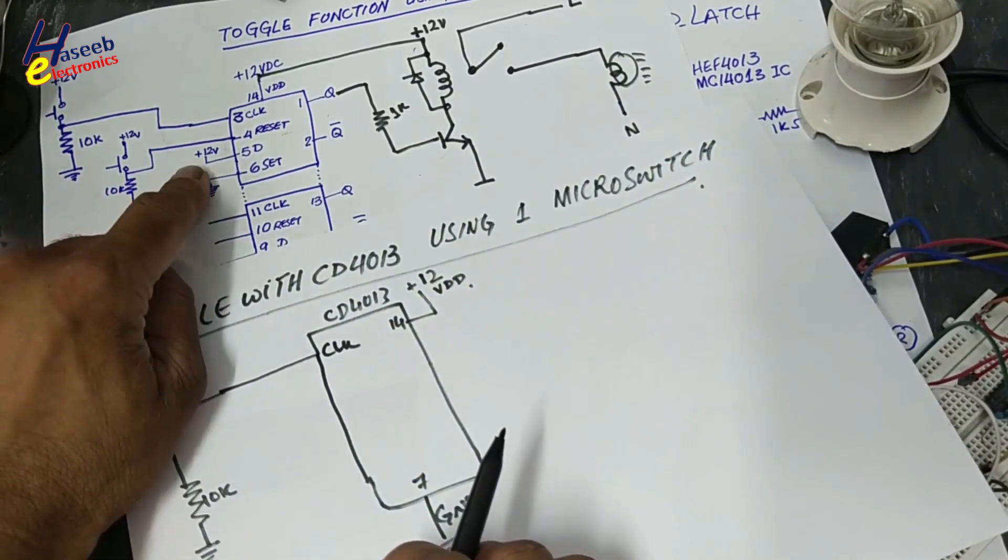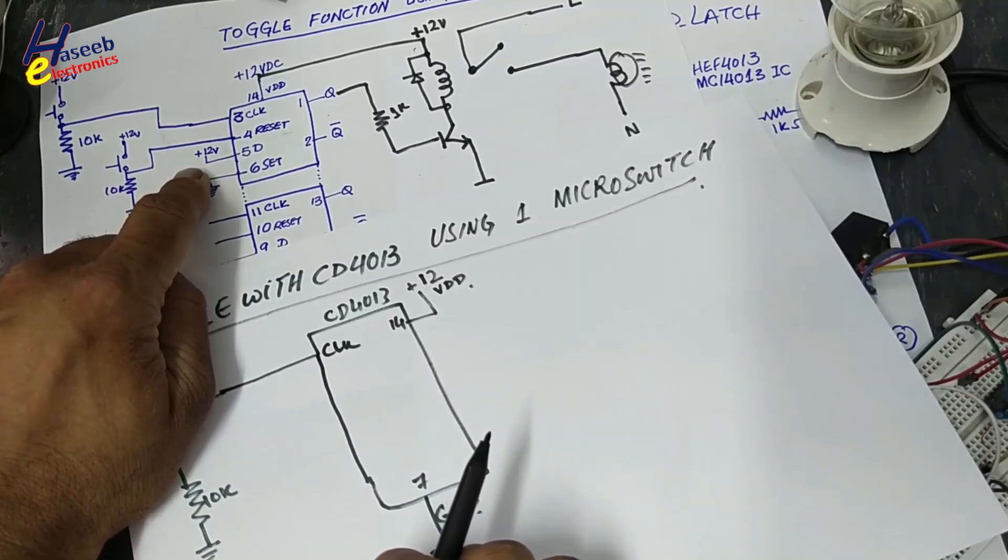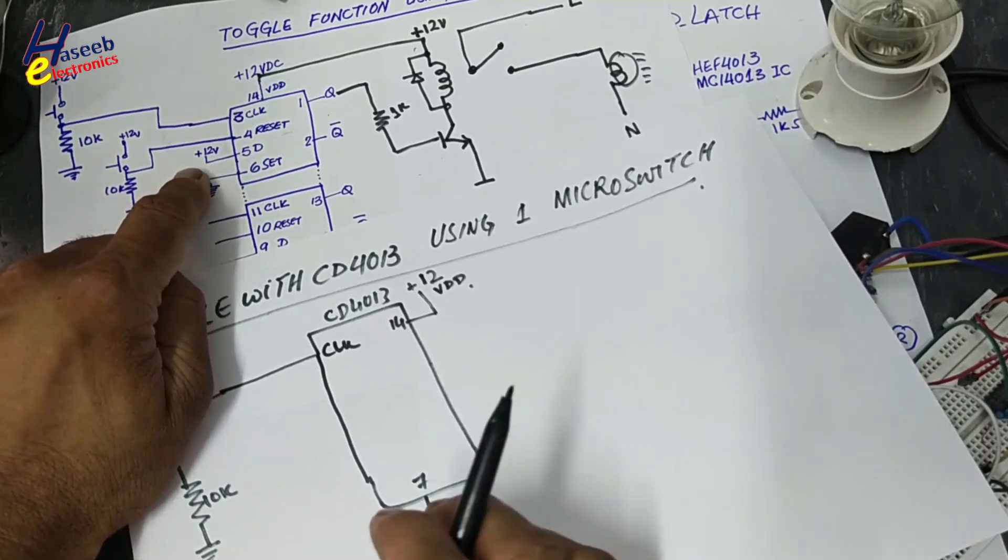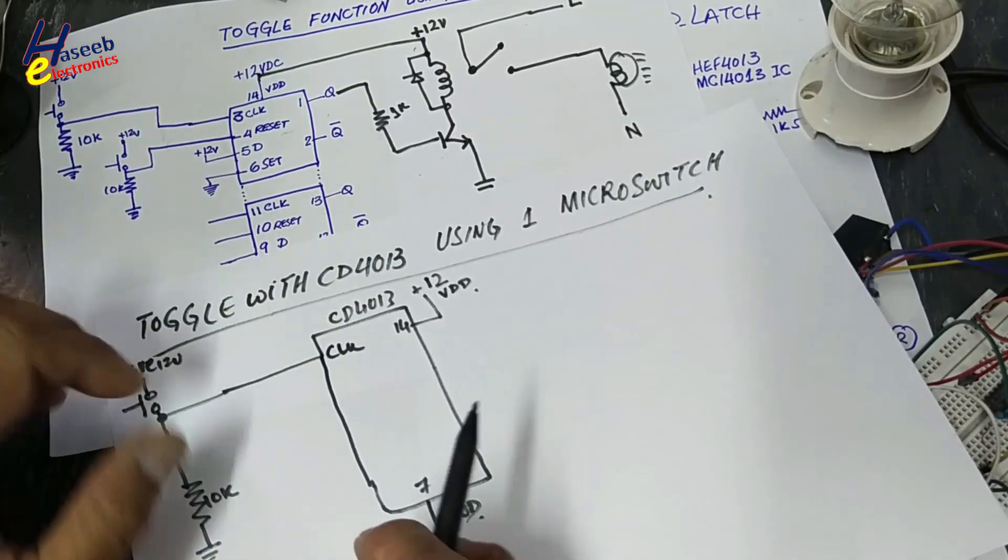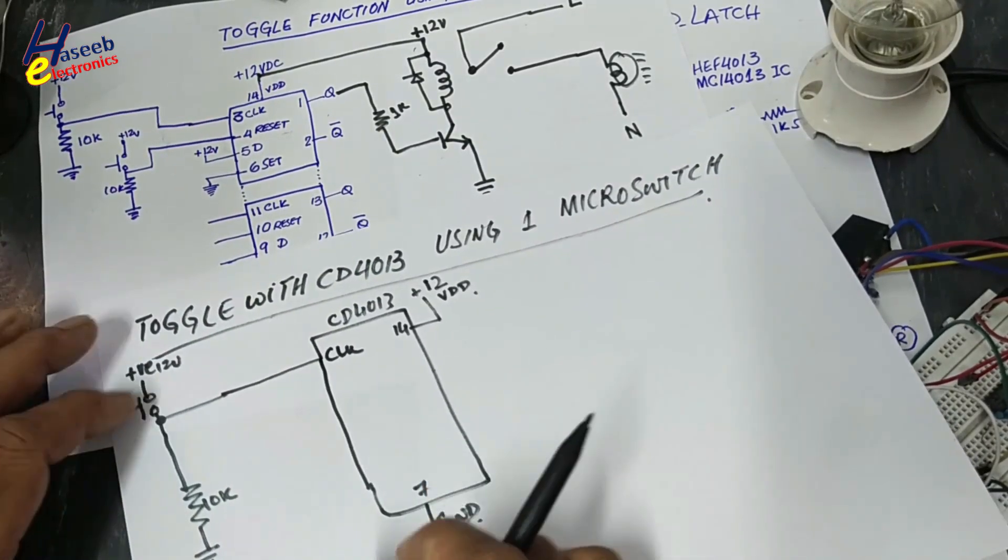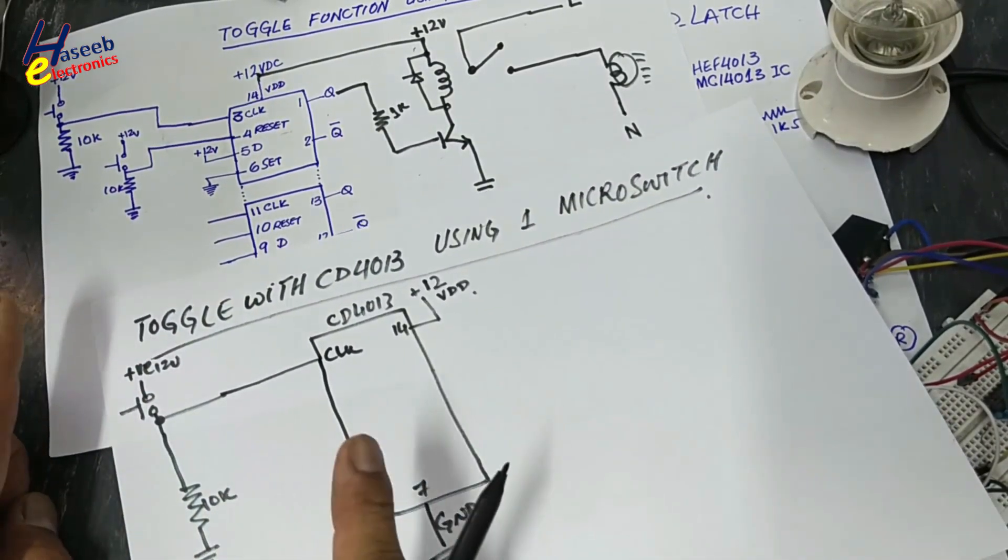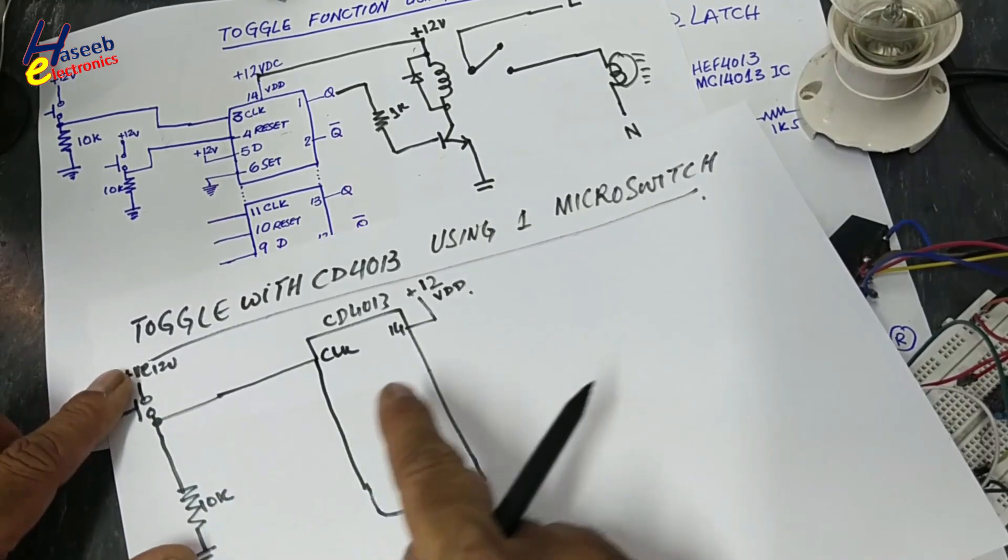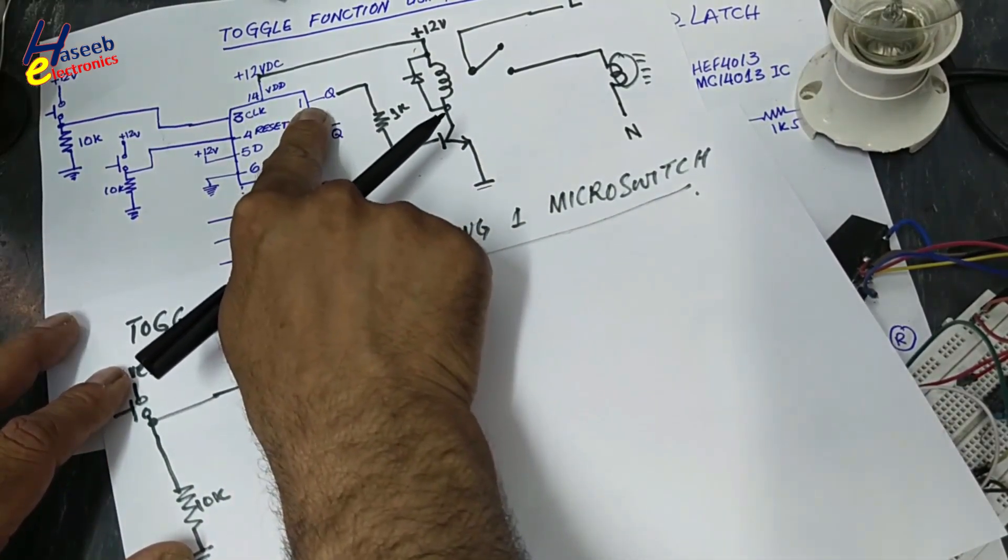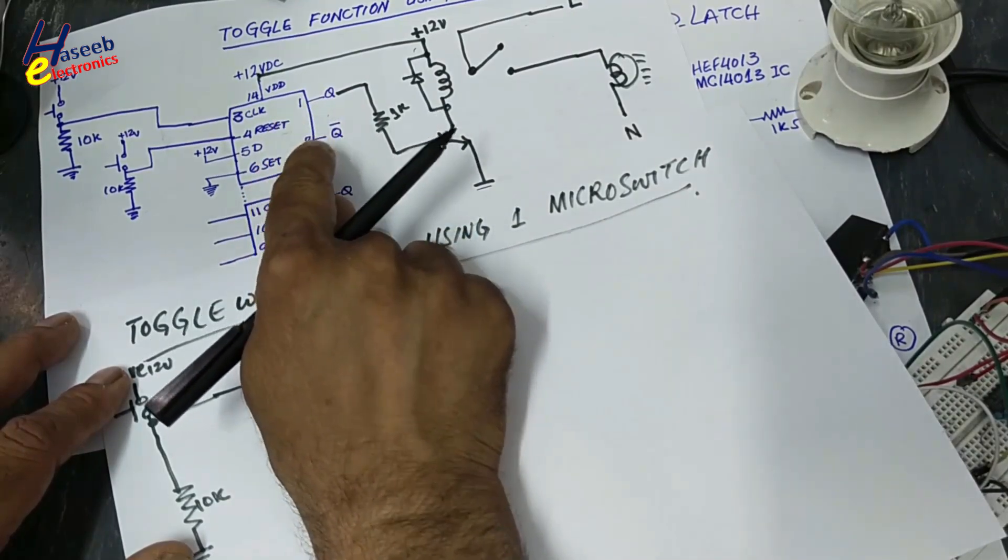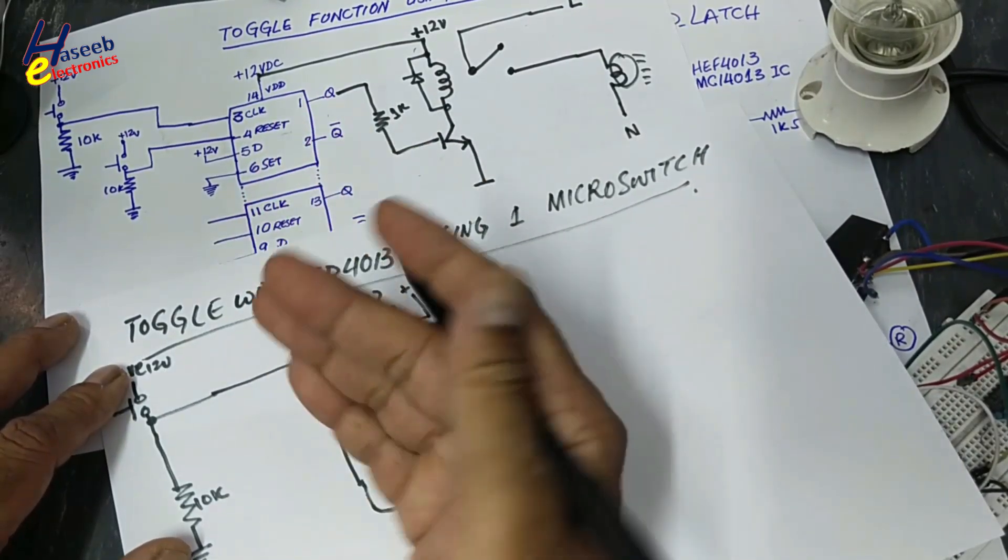In our last case, data pin was connected to high. So all the time when there is high clock, the output will be high. But in this condition, at each toggle, at each clock, it will use Q bar output. That is complement of Q output. So Q bar will be inverted output.